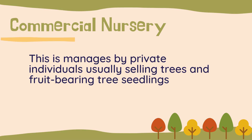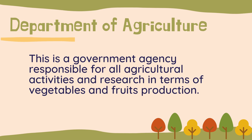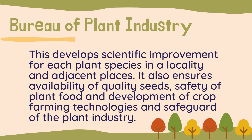The number one source of fruit bearing trees is a commercial nursery. This is managed by a private individual usually selling trees and fruit bearing tree seedlings. It is followed by agricultural training institutes — schools that offer courses related to agriculture, including production and distribution of seedlings. Next is the Department of Agriculture, a government agency responsible for all agricultural activities and research in terms of vegetable and fruit production. Fourth is the Bureau of Plant Industry.